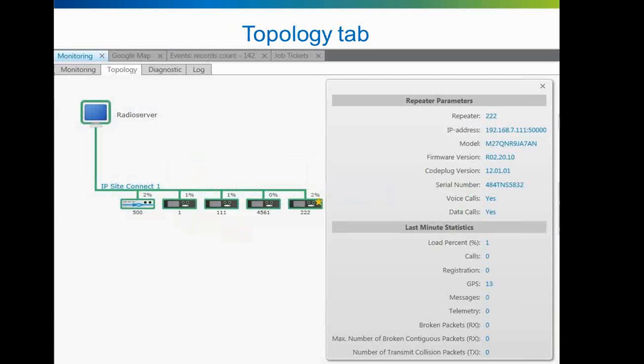The second tab is called Topology and represents the structure of all connected networks. It also gives the ability to get extra information about repeaters in the network, as well as the option to control repeaters, switch channels, and adjust power level. It is also possible to configure the radio server to add other devices to the topology, such as Cisco routers and Eaton UPS devices, as well as other unknown devices, and to group them into special regions called sites. The device ID is shown under its picture.